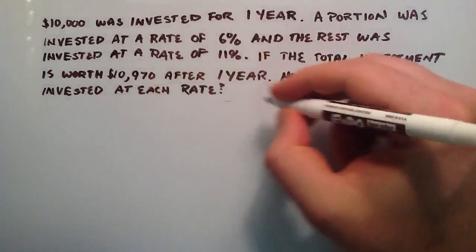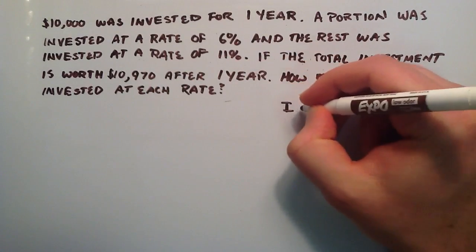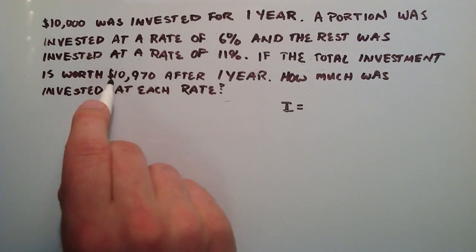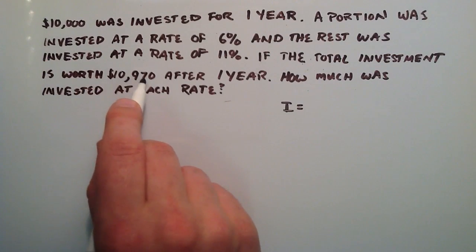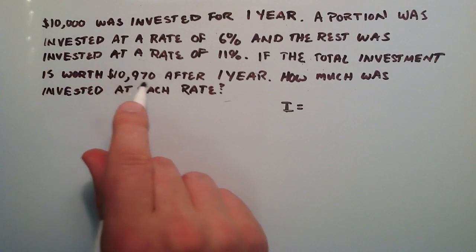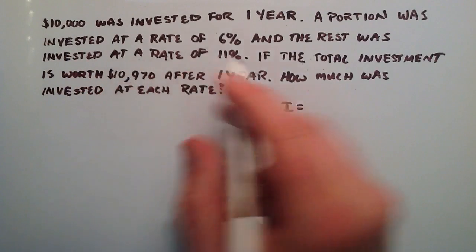So the interest that we have at the end of this one year is basically going to be the difference of these two numbers. So if we have $10,970 at the end, we started with $10,000, we have an extra $970. So that would be our interest.